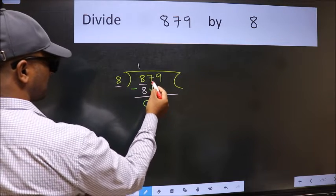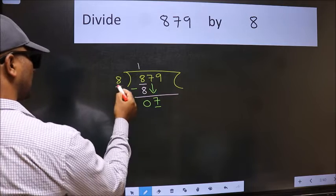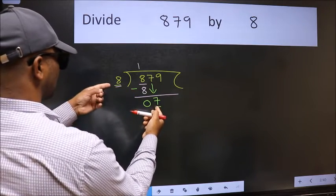After this, bring down the beside number. So 7 down. Now here we have 7 and here 8. 7 is smaller than 8.